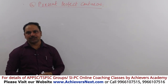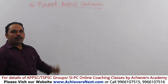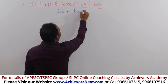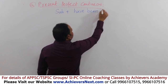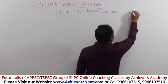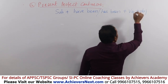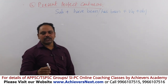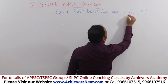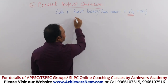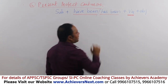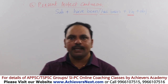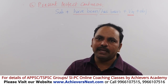Tense is present perfect continuous tense. The verb form in the present perfect continuous tense is: subject plus have been or has been plus V4 (object). This is the verb form that we use in the present perfect continuous tense.